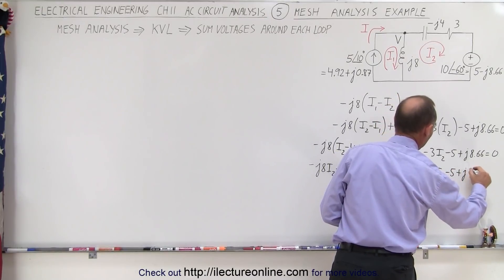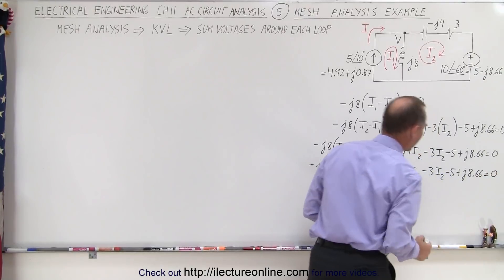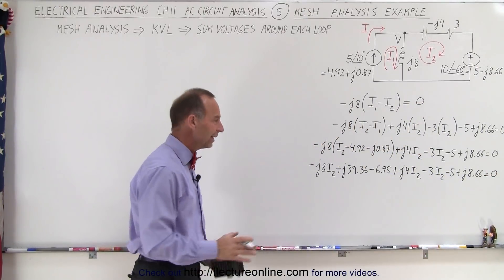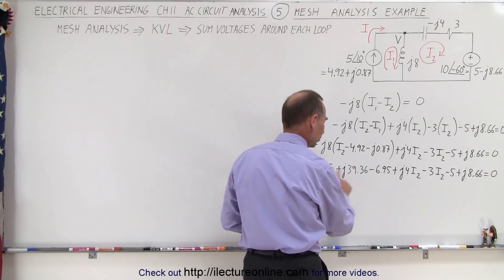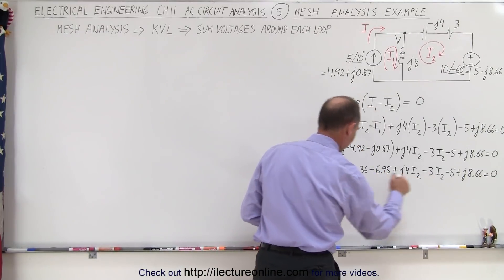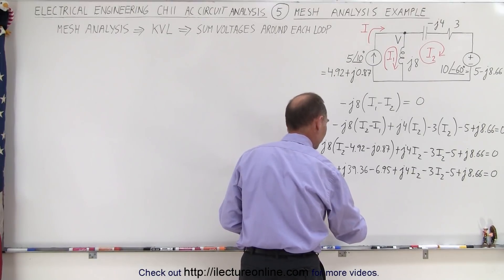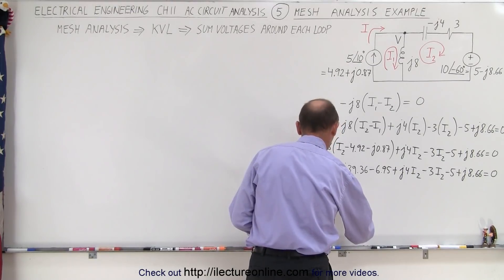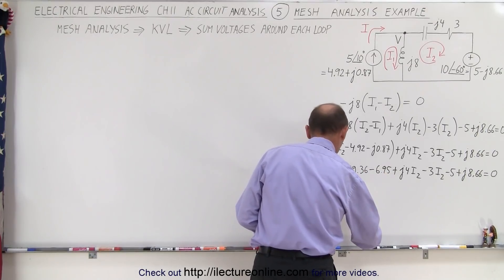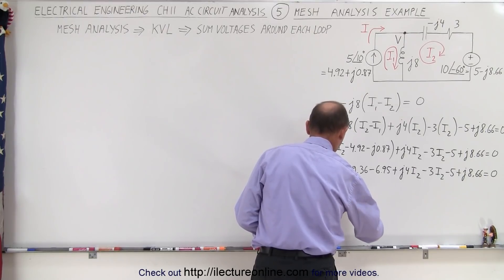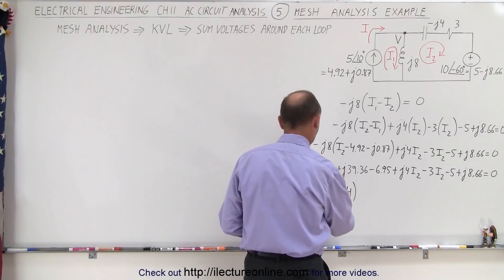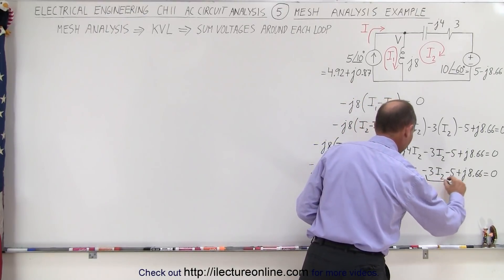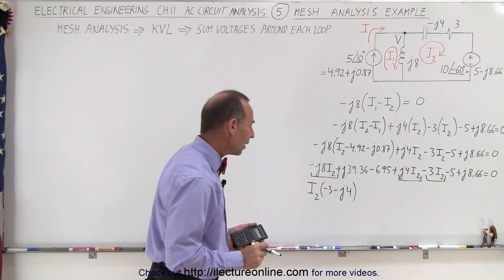And then plus J4 I2 minus 3 I2 minus 5 plus J8.66 equals 0. Alright now we can go ahead and add all the terms with the I2 and all the other terms together so we have minus J8 plus J4 minus 3 so we have I2 times minus 3 and minus 8 plus 4 minus J4. Alright and that leaves so we combine this and this term and this term and this term.